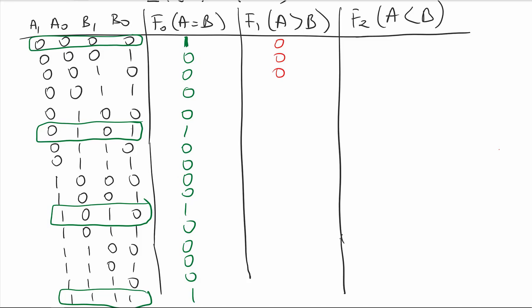Now let's look at the case for A is bigger than B. Most entries are zero. It is only in the case where A is 1 and B is 0 that A is bigger than B, so the output is 1. For the case where A is 1,0 I have 1,1 here but 0 and 0 here. Where A is 1,1 I have 1,1,1, and 0.